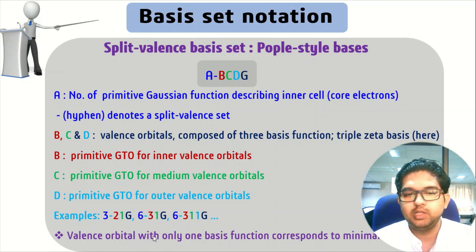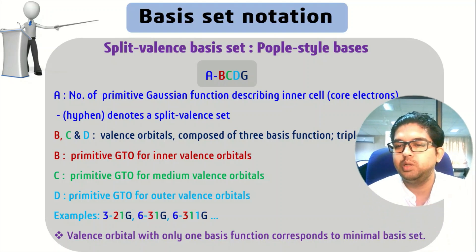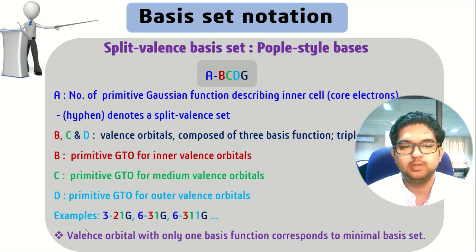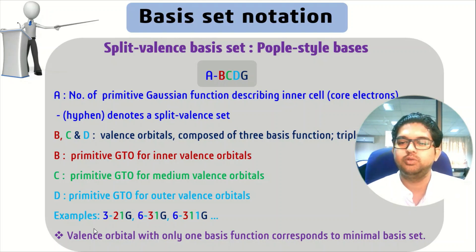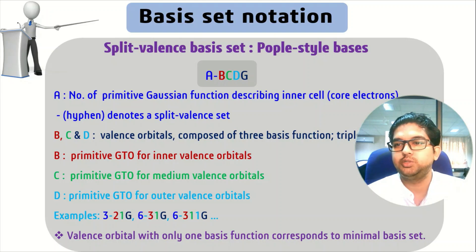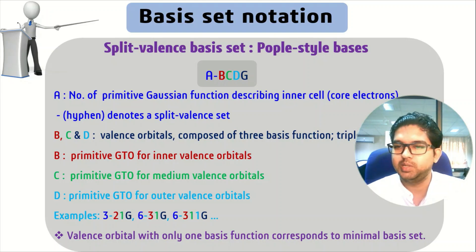A valence orbital with only one basis function corresponds to the minimal basis set. For example, STO-1G is also known as a minimal basis set. Similarly, STO-2G — all these are minimal basis sets.